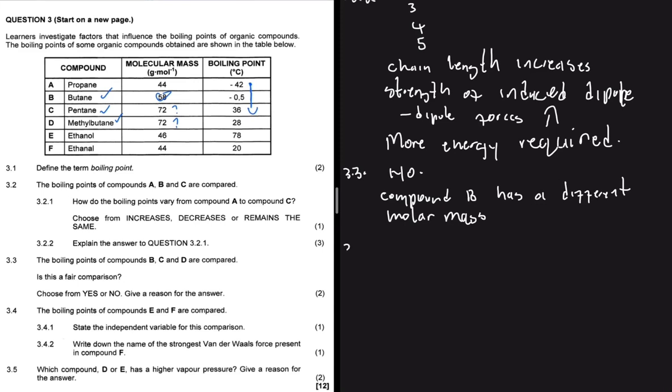Question 3.4 says the boiling points of compounds E and F are compared. So here's E, which is ethanol. And F, which is ethanal. Question 3.4.1 says state the independent variable for this comparison. So the dependent is what we're looking for. In this instance, it will be the boiling point.